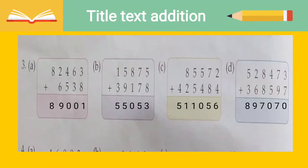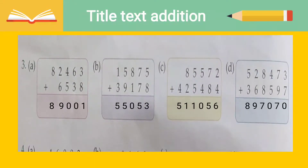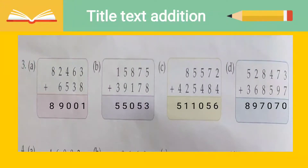Moving on to question three. Here the place values are not given — just the digits are given — and we have to add the other digits. As you can see: 82,463 we have to add by 6,538. Simply do the addition and write your final answer. I have solved all the questions here, so you can do it yourself or follow along.